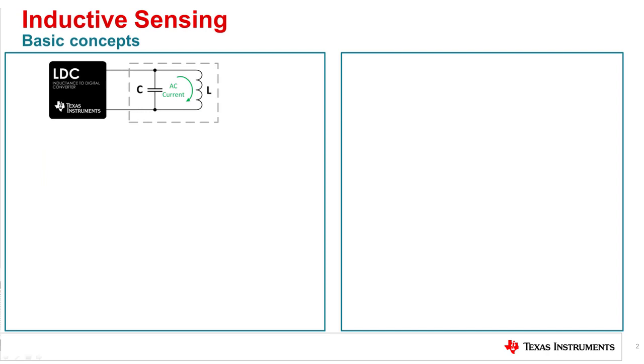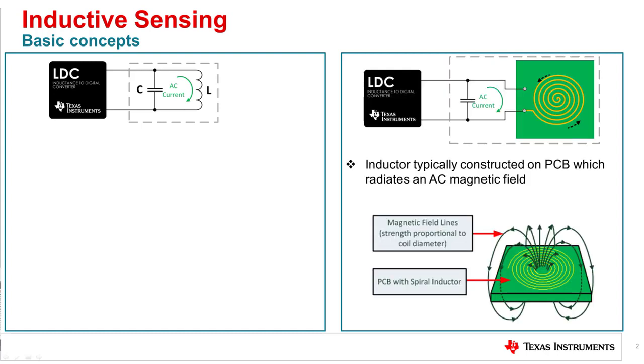Inductive sensors detect the proximity of metal targets towards an inductive sense element. The LDC or inductance to digital converter is connected to a fixed capacitor in parallel with an inductive coil typically on a PCB.